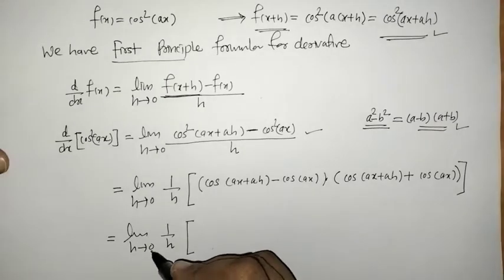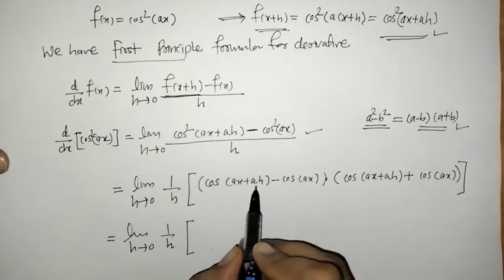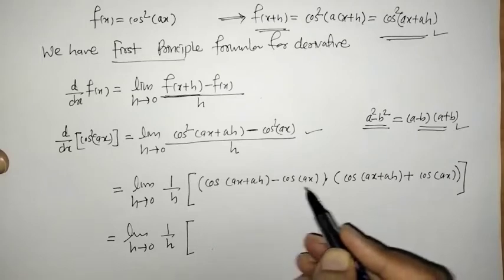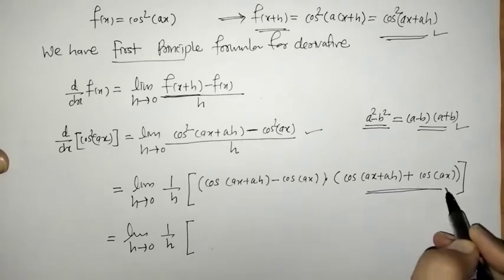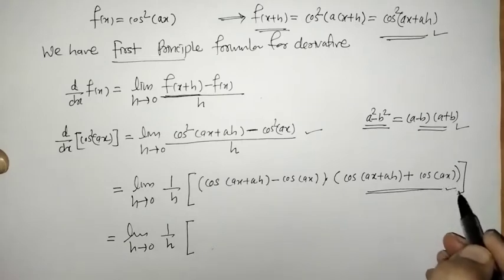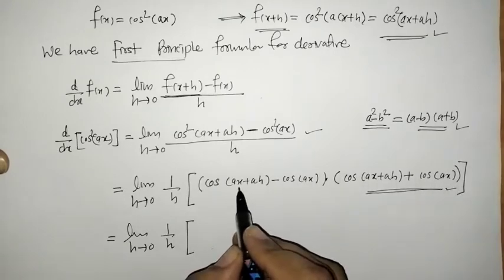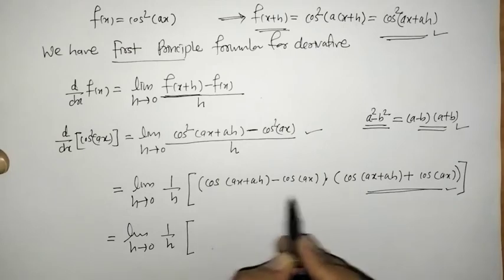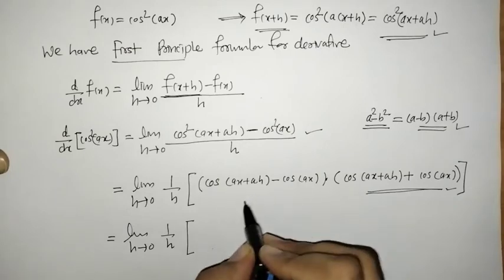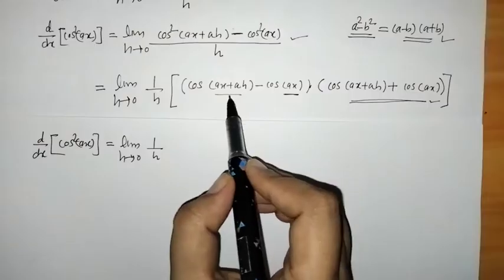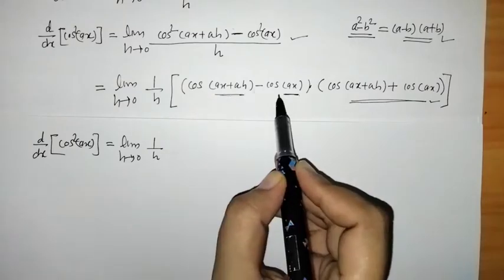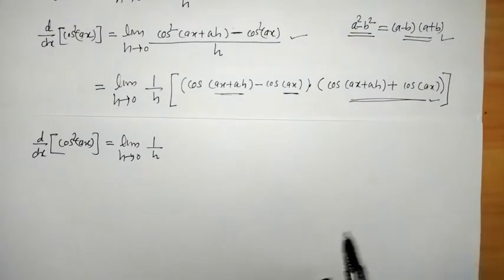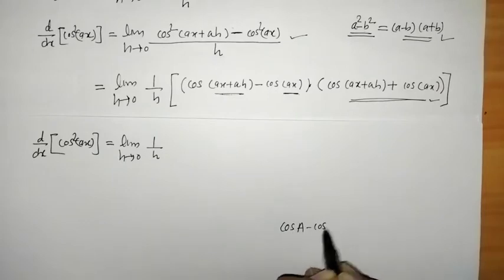Now when we put h equals 0, we get cos(ax) minus cos(ax), which gets cancelled. But the other term does not get cancelled, so again we need to do some adjustment. We have cos(ax+ah) minus cos(ax), and we know the factorization formula for cos A minus cos B.